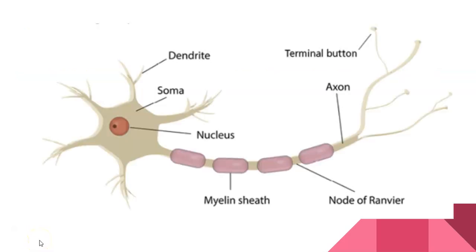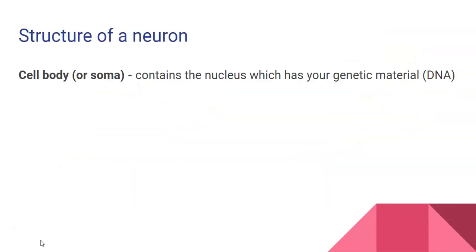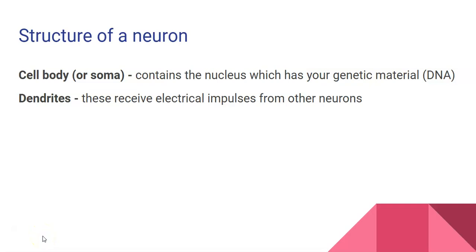Here's a picture of a motor neuron. We need to know what the different parts do and the roles they play. The cell body, or soma, contains the nucleus, which holds all your genetic material — your DNA. Dendrites are the parts that receive electrical impulses from other neurons.